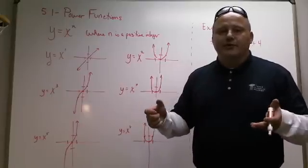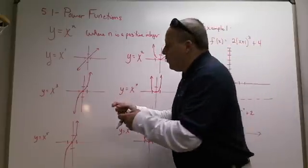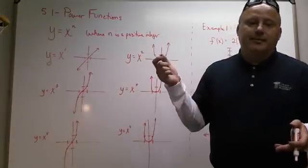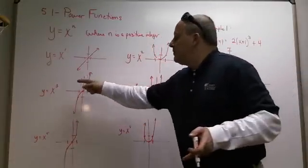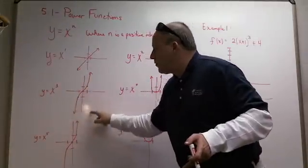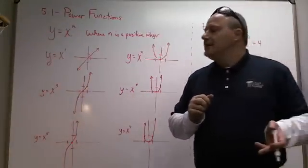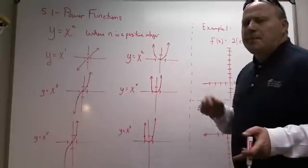But at the end of the day, they do look the same. The left end goes down and the right end goes up. Again, if you snap a negative on it, the left end will go up and the right will go down because it gets vertically reflected. So these are what power functions are.